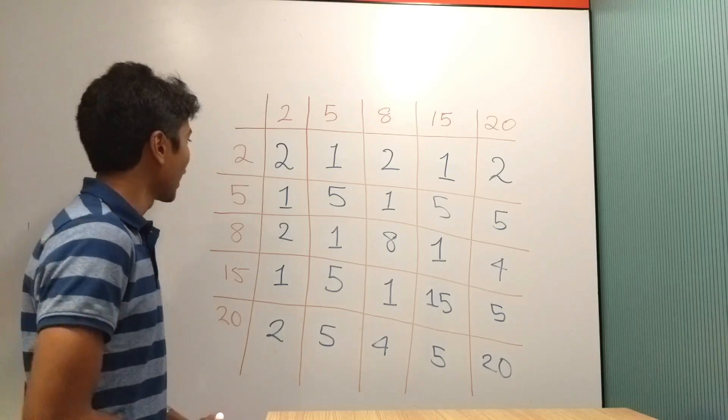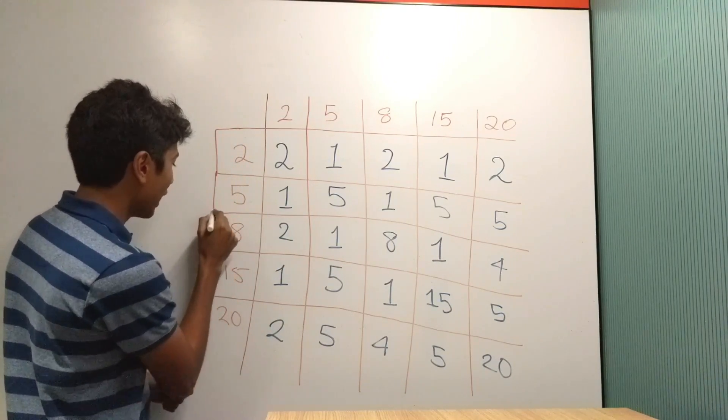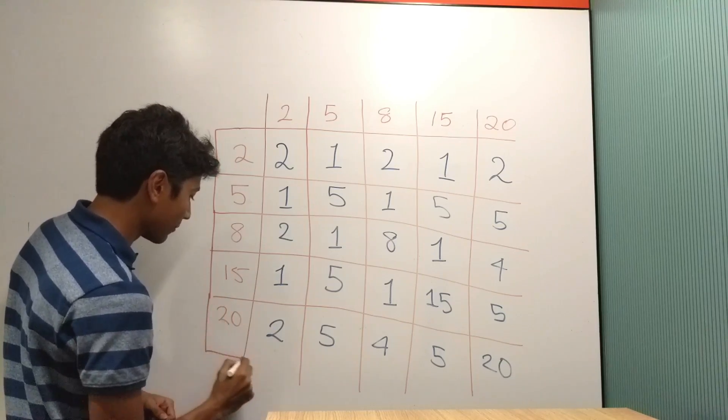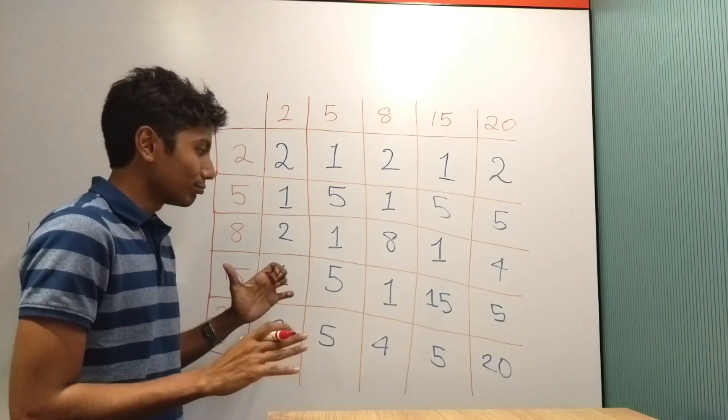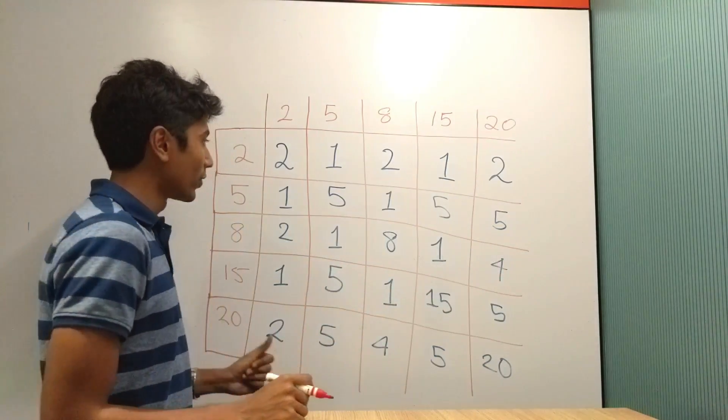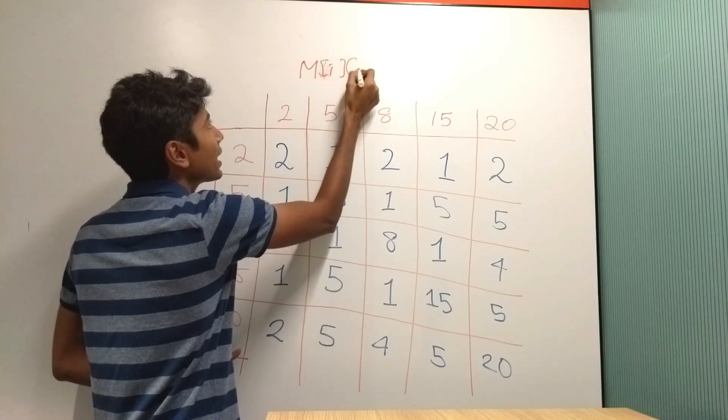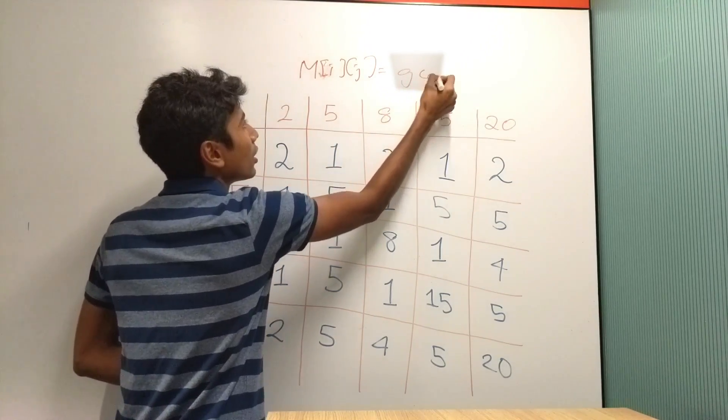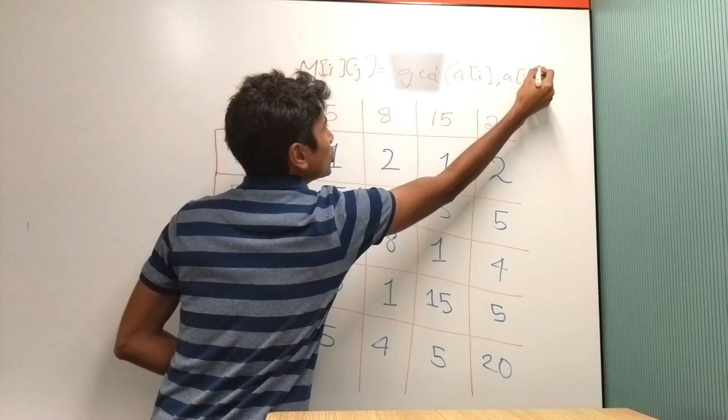What I'll be doing is having an original array which is 2, 5, 8, 15, and 20. Now what Rachit needs to do is guess this array, and of course I won't give him the original array. Instead I'll give him a matrix where M[i][j] equals the GCD of element at i and element at j.